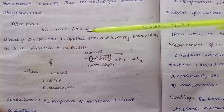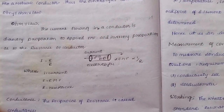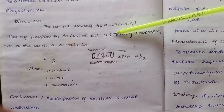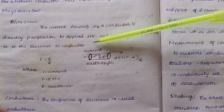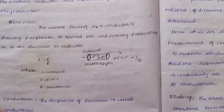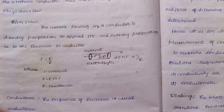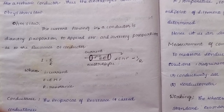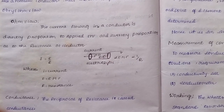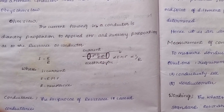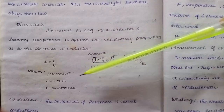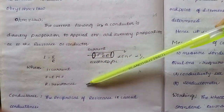The current flowing in a conductor is directly proportional to the applied EMF — electromotive force — which is the external force applied. It is inversely proportional to the resistance of the conductor. Here: I = current, E = electromotive force, R = resistance.